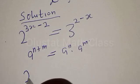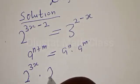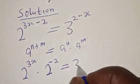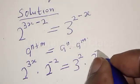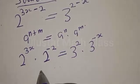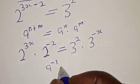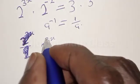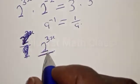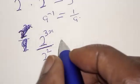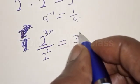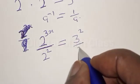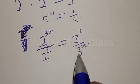We have 2 raised to power 3x multiplied by 2 raised to power minus 2, equal to 3 squared multiplied by 3 raised to power minus x. Remember also, if you have a raised to power minus 1, it is the same thing as 1 over a. Therefore we have 2 raised to power 3x over 2 raised to power 2, equal to 3 raised to power 2 over 3 raised to power x.